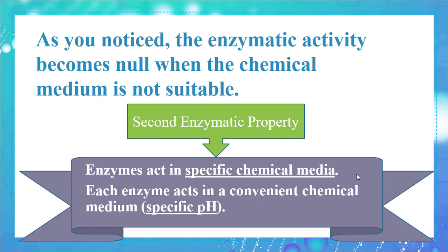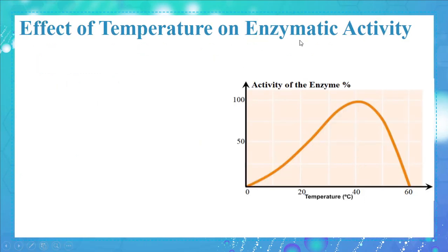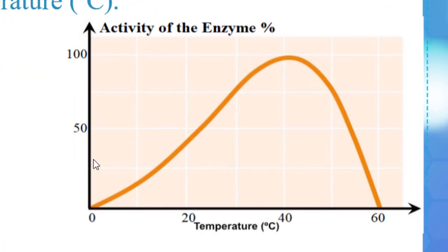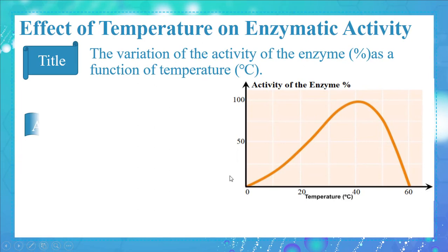Now let's study the effect of temperature on enzymatic activity. This graph shows the variation of the activity of an enzyme, in percentage, as a function of temperature in degrees Celsius. At zero degrees Celsius, the activity of the enzyme is zero percent. As the temperature increased to 40°C, the activity increased to the maximum — 100 percent. As the temperature increased to 60°C, the activity decreased to zero percent again.